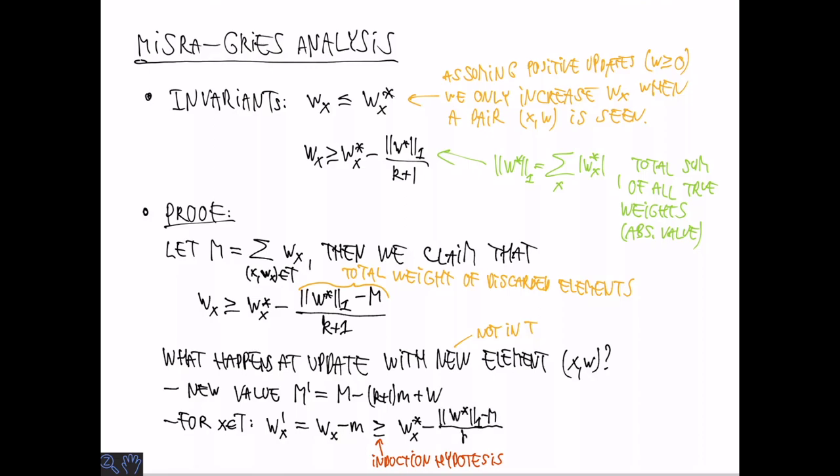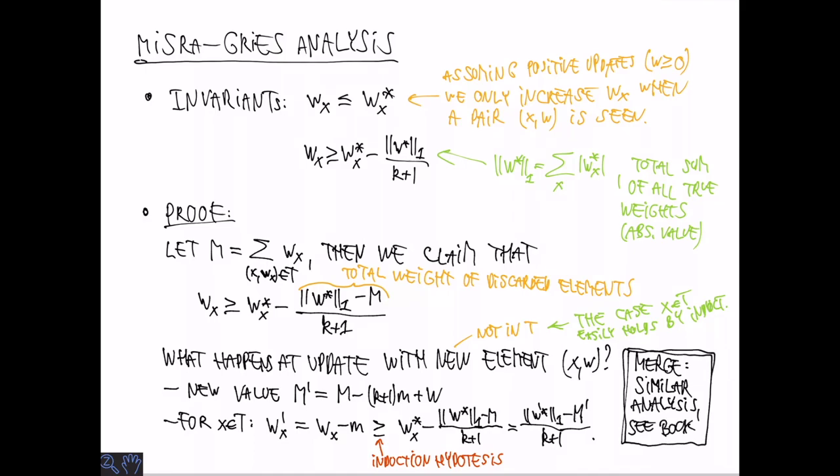The new weight that is going to be stored is the old weight minus M and the induction hypothesis tells us that this is at least equal to the old weight vector minus the old M divided by k plus 1, which again by definition is equal to what we want, namely the weight of the new weight vector minus the new value of M divided by k plus 1. Of course we also need to consider the case where the element X actually is in the summary, but in this case it's really easy to see by induction that the claim holds. For merge we can also make an argument that all the weights are close to the true weight, and I refer to the book for that.